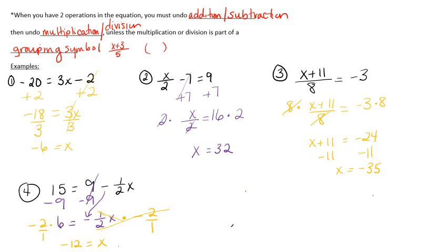In summary, two-step equations are solved by doing the opposite of the order of operations: undo addition and subtraction first, then multiplication and division. The exception is when the whole expression is inside a grouping symbol, like in Example 3, where you multiply by 8 first to clear it, then subtract 11.